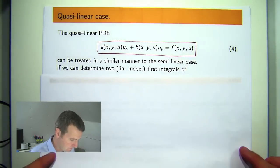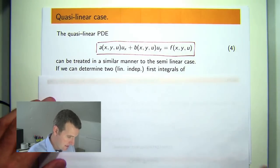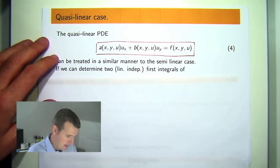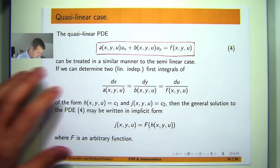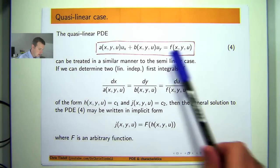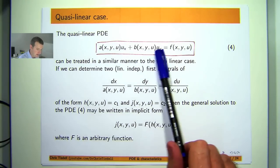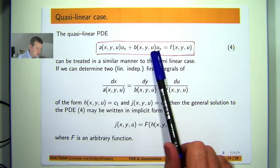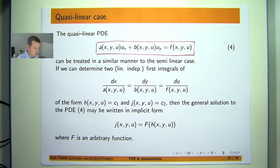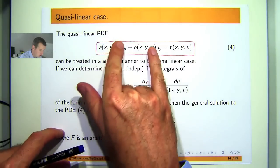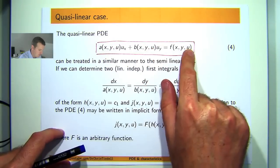So here is a first order semi-linear PDE. You can see the coefficients of the partial derivatives may depend on u. For semi-linear problems, the u doesn't appear there, but it does appear over here.